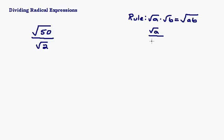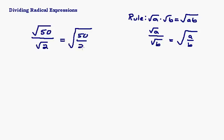The same is true for dividing. The square root of a divided by the square root of b is the square root of a over b, which is the situation we have right here. So this is simply the square root of 50 over 2. 50 divided by 2 is 25, and the square root of 25 is 5. So basically, as long as both are underneath the square root, you can just divide them.